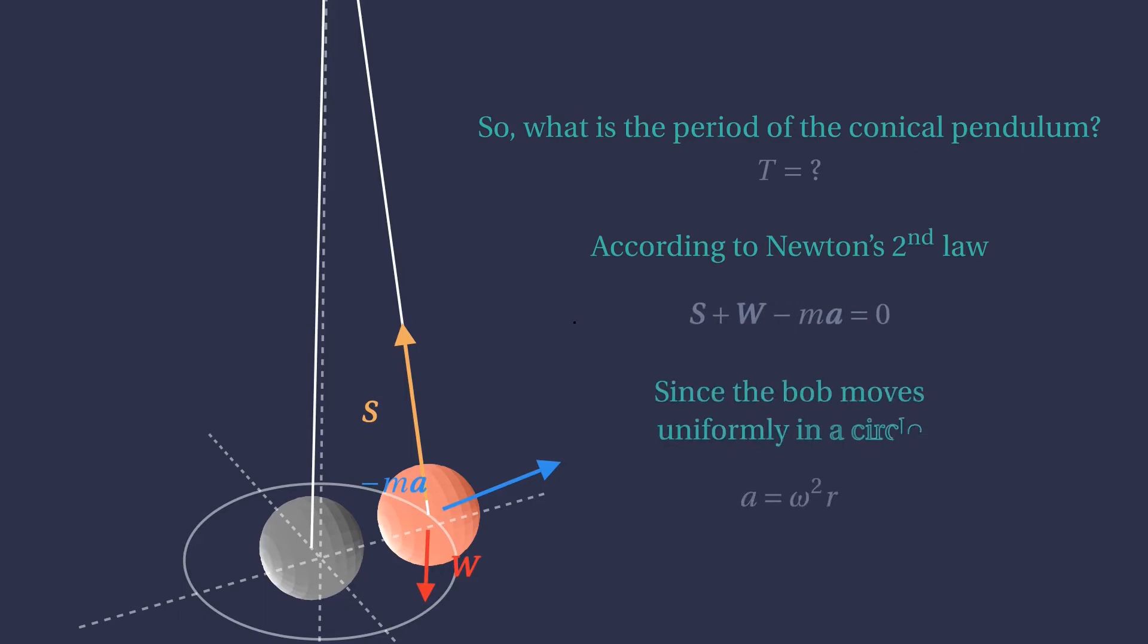Since the bob in the conical pendulum moves in a uniform circular motion, its acceleration can be given as a function of the angular frequency omega and the radius of the circular trajectory r. We can write both these quantities using the ones already in the problem.